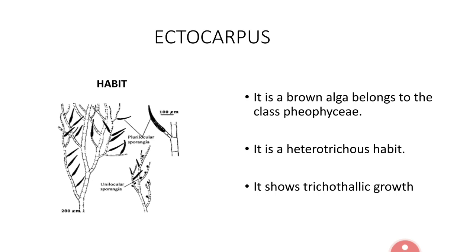The habit of Ectocarpus is a tuft-like or feather-like structure where we can see two types of branch systems. Branches which grow prostrately together are called the prostrate branch system, and branches which grow vertically or erectly together are called the erect system of branches. Prostrate branches show apical cell growth, whereas erect branches show either intercalary growth, also called trichothalic growth, or some species show diffusive growth.